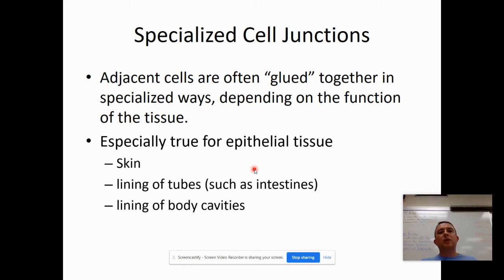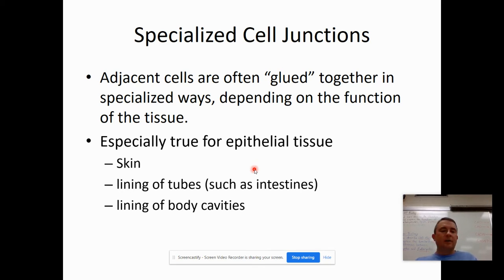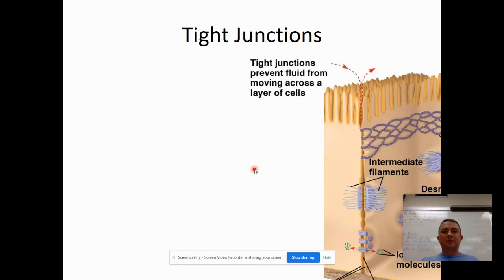Epithelial tissue generally refers to skin or the linings of body parts — like the inner lining of your small intestine or the lining of your urinary bladder. Epithelial cells are certainly not the only cells that have these junctions, but it does seem to be especially true for epithelial cells. The first type of junction, which would only be found in animal tissue, is called tight junctions.